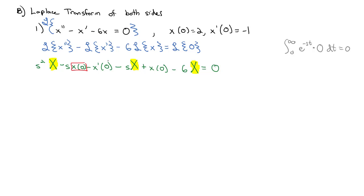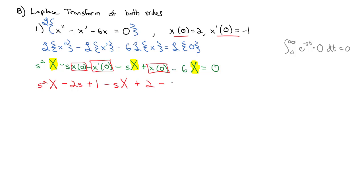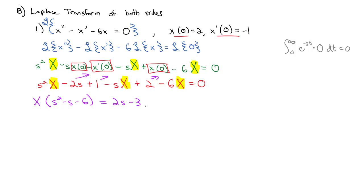Now we're solving for capital X. Let's simplify by plugging in x of 0 equals 2 and x prime of 0 equals negative 1. We have s squared X minus 2s minus negative 1, minus s times capital X plus 2, minus 6 times capital X. Factoring X out of those terms leaves s squared minus s minus 6, and the remaining terms go to the other side giving 2s minus 3. Dividing, we find capital X equals 2s minus 3 over s squared minus s minus 6.